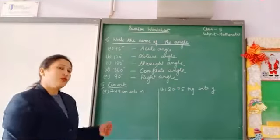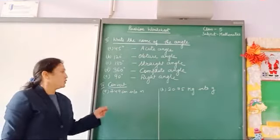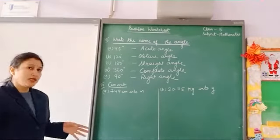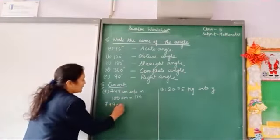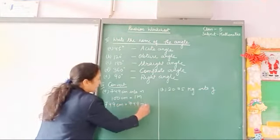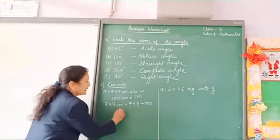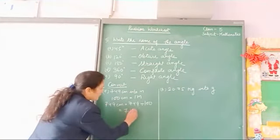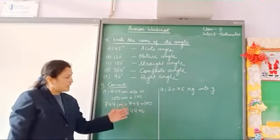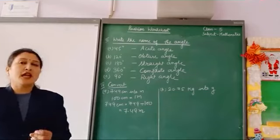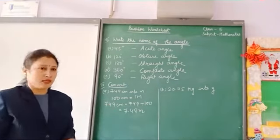In question number 4 we have to convert 749 centimeters into meters. As we know, 100 centimeters makes 1 meter. So 749 centimeters divided by 100 gives us 7.49 meters. In part B, 20.75 kg has to be converted into grams. We know 1 kg equals 1000 grams. So we multiply 20.75 by 1000, which means we move the decimal and put zeros. The answer is 20,750 grams.